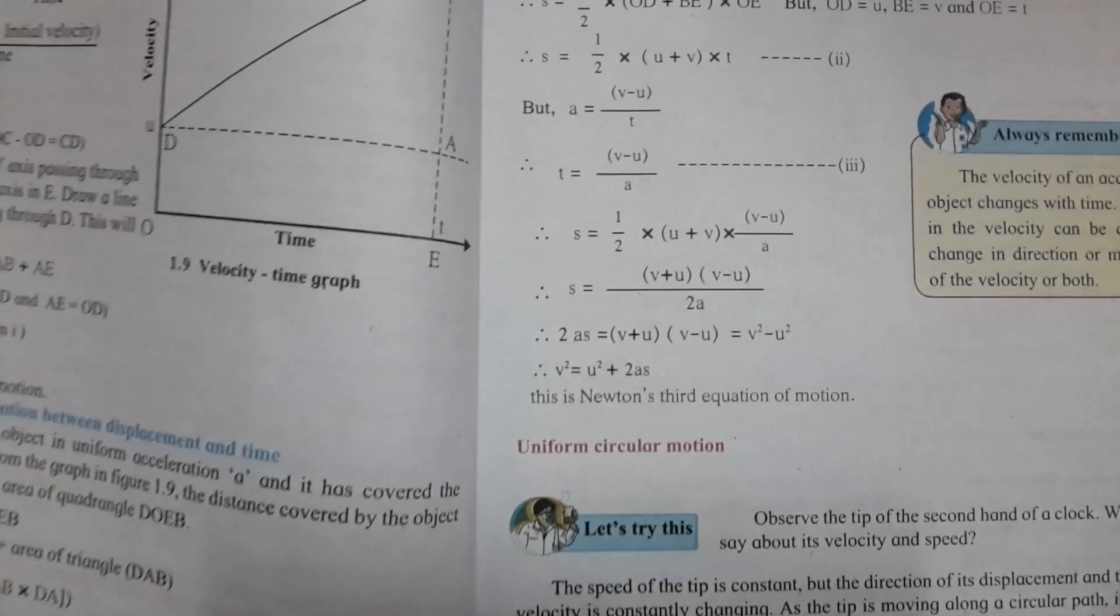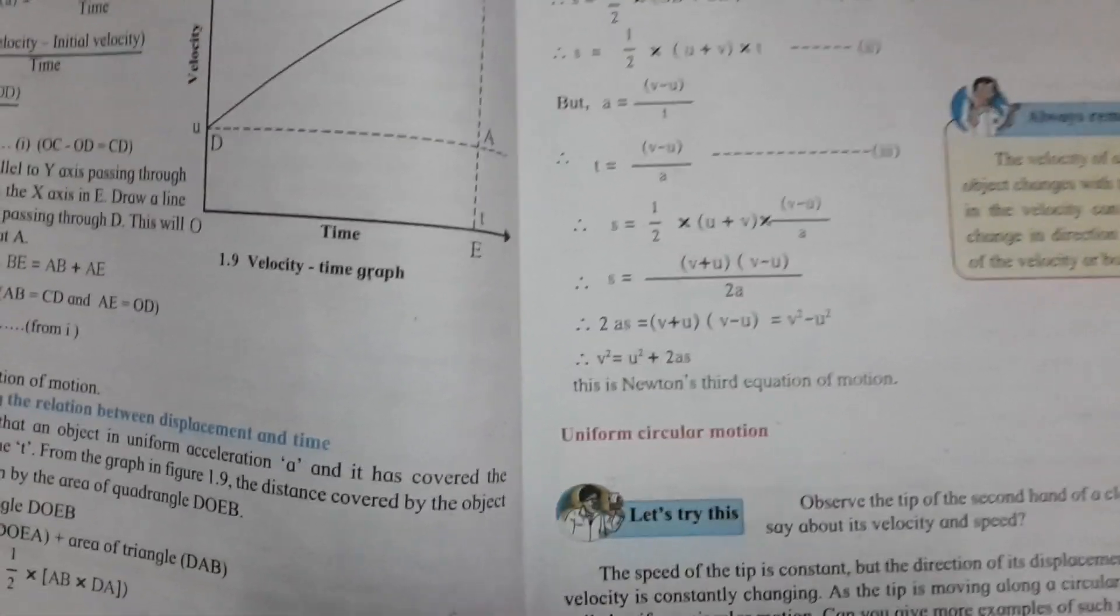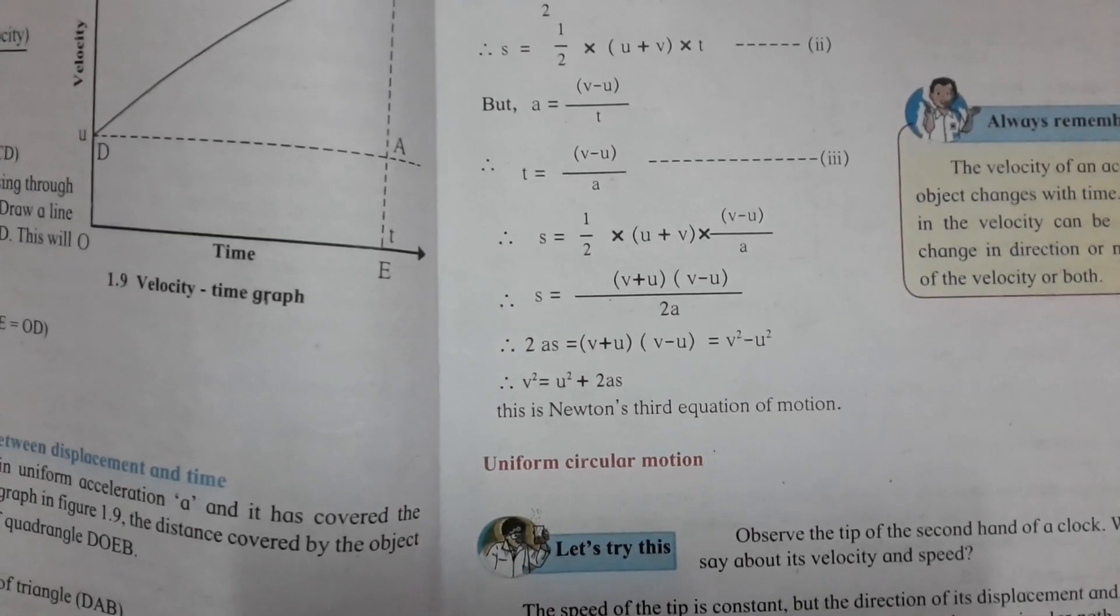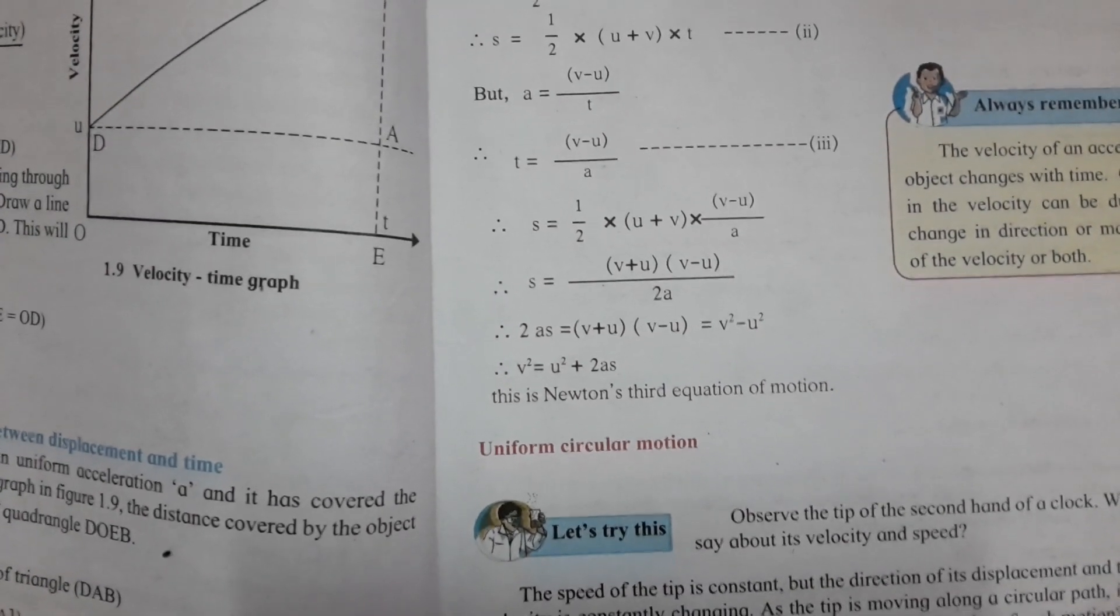In this formula, if we substitute T equals V minus U divided by A, we get the third equation.